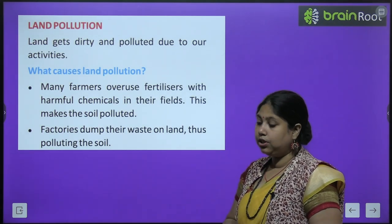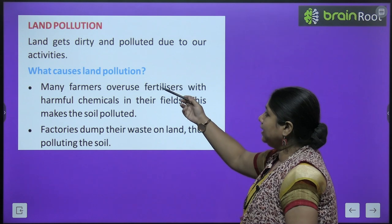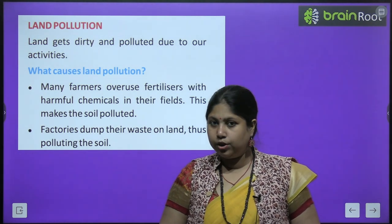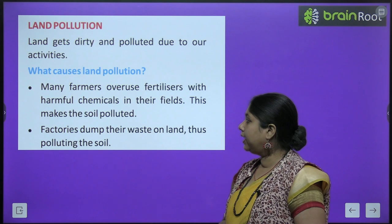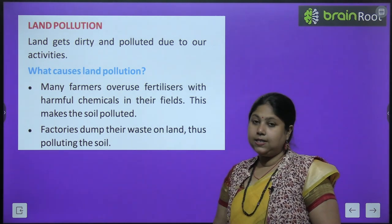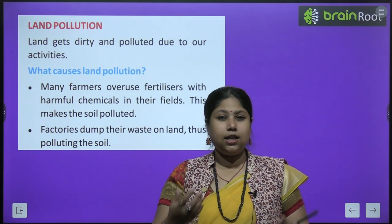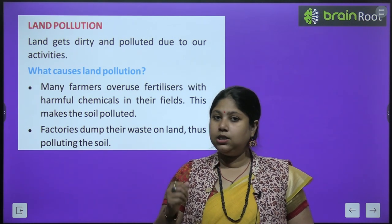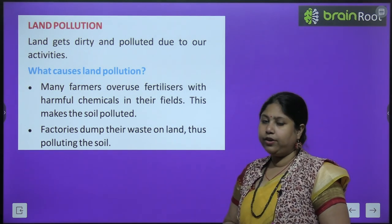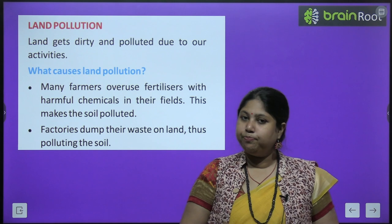Iske baad hum padhenge land pollution. Hum jis dharti pe rehte hain, jo soil hai, jo mitti hai — voh bhi kaise pradushit ho rahi hai. Land gets dirty and polluted due to our activities. Many farmers overuse fertilizers with harmful chemicals in their fields — this makes the soil polluted. Factories dump their waste on land, polluting the soil. Throwing garbage in the open also pollutes land — aise khole mein kuda karkot daalna, isse bhi pollution badhta hai.